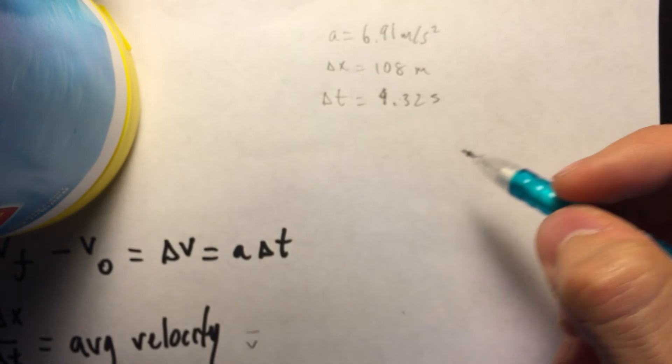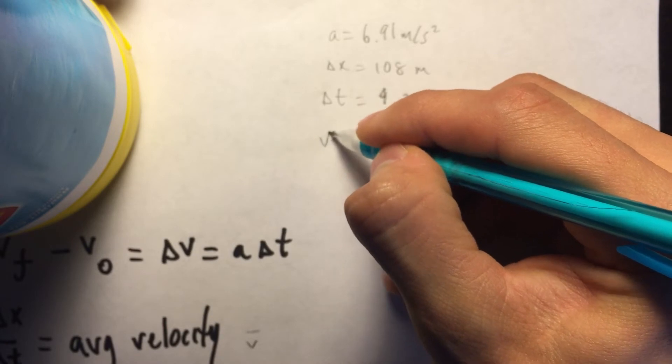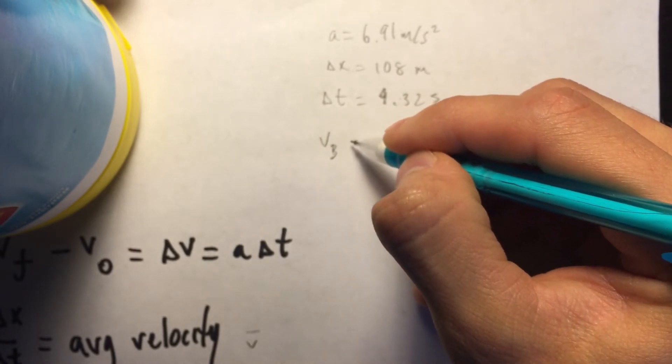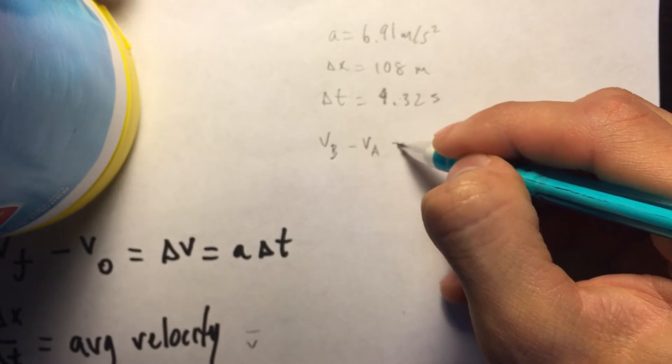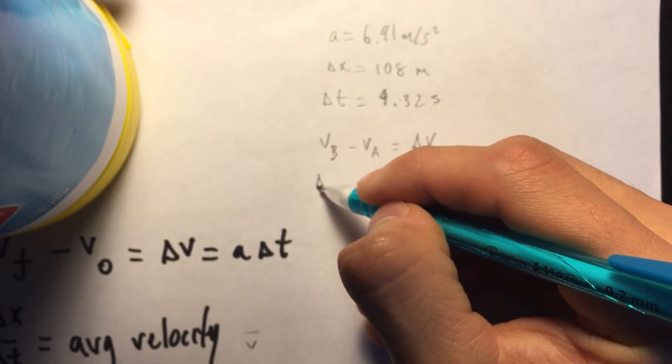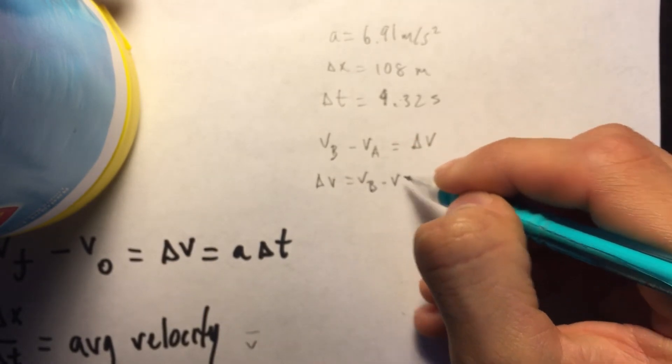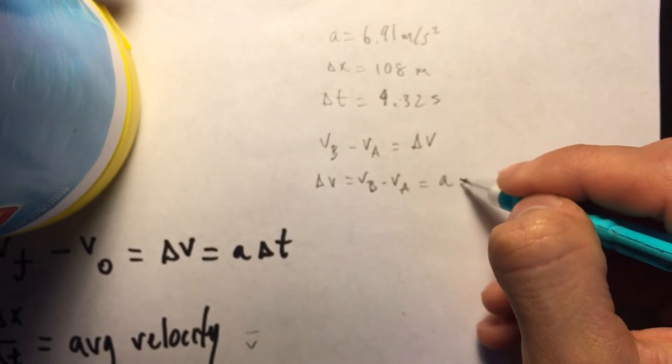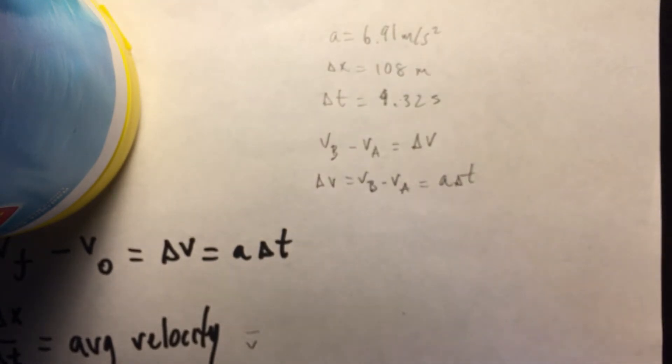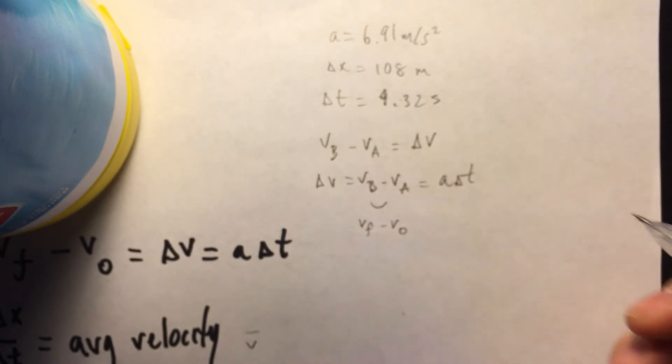And we also have the expression which we had derived earlier, which we know is VB minus VA equals change in V. We also have that. And let's just add this one, which is the same one, but it includes everything. So we have change in V, V sub B minus V sub A, which equals acceleration times change in time, right? So note that these two right here, it's the same as V final minus V initial, and it's the same expression that we had earlier.